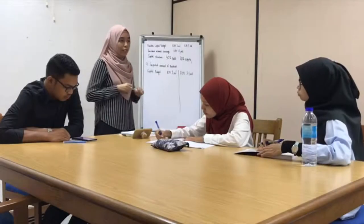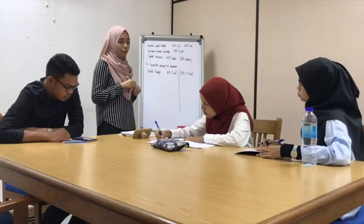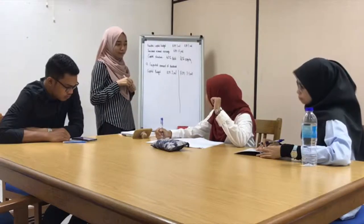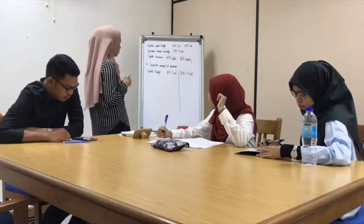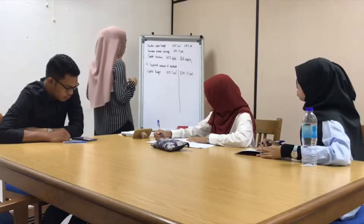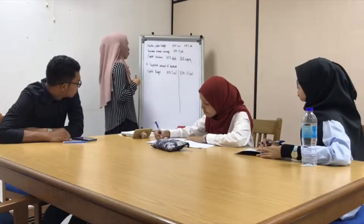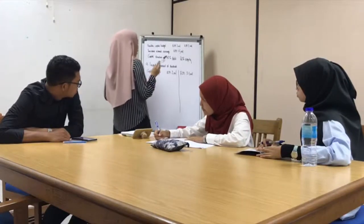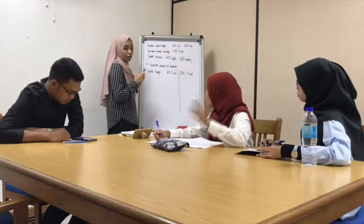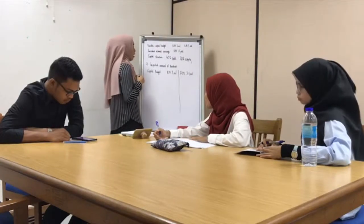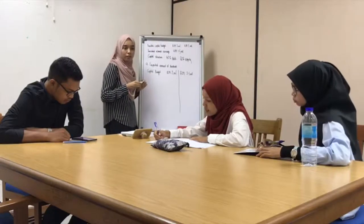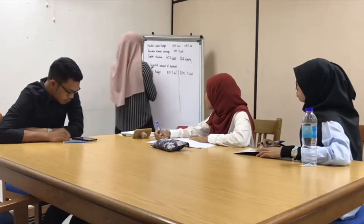So what is the first step we have to do for this question? We need to calculate the equity portion first. So who can give me the portion of equity invested in the capital budget of 2 million? 1.2. And how about for the 3.5 million capital budget? 2.1. Okay.